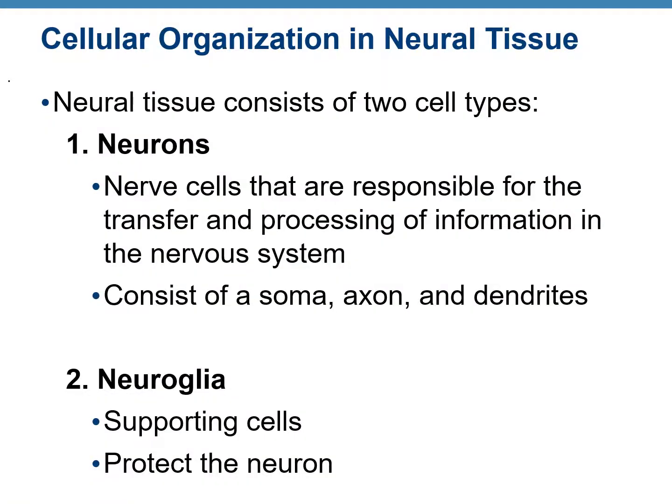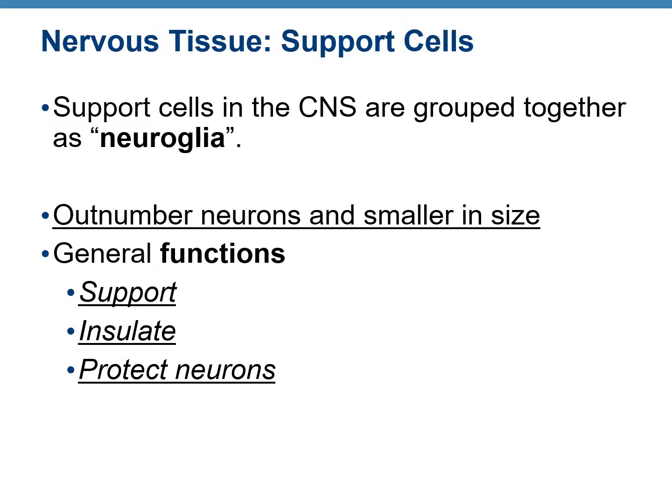Neural or nervous tissue is composed of two types of cells. First are neurons, or nerve cells, which are responsible for transmitting all electrical information. A neuron consists of the cell body or soma, the axon, and dendrites. The second type of cells in neural tissue is neuroglia, or nerve glue, which includes various types of supporting cells whose main function is to protect and nourish the neurons. Neuroglia are smaller than neurons — since neurons are the longest cells in the body — but they outnumber neurons. Their function is to support, insulate, and protect the neurons.